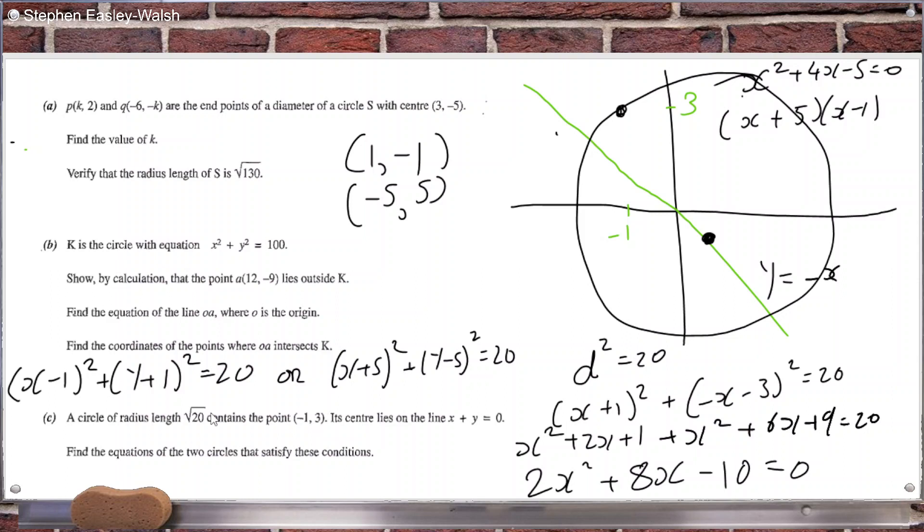So let's just check that out. Minus one minus one squared plus three plus one squared. Yep. That's 20. Okay. Minus one plus five squared plus three minus five squared. Hopefully this is 20 as well. So yeah. Okay. So I'm satisfied. Those are the two equations of the two circles that meet the conditions in that question. Yeah. Okay. That's good.